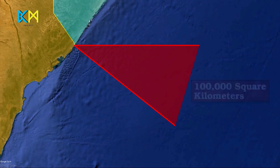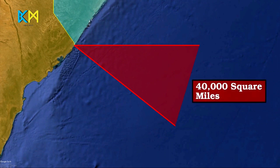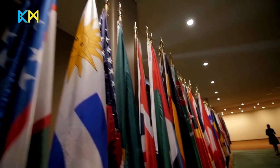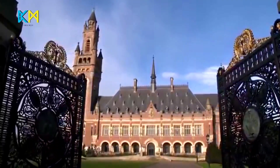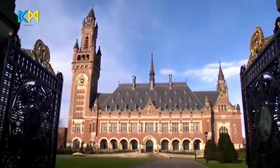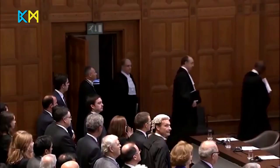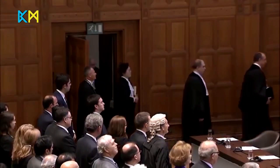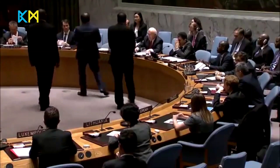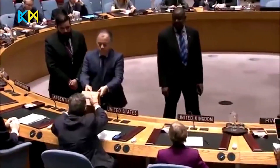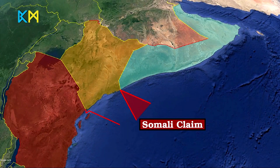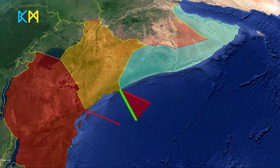The disputed area forms a large triangular region where large deposits of gas and fish are thought to exist. Kenya would like to work out the dispute in an out-of-court settlement, to which Somalia has disagreed. In 2014, Somalia sued Kenya at the International Court of Justice. The court represents one way of solving border conflicts in maritime areas if bilateral or regional attempts fail. Somalia's basis of the claim is not based on the direction of the land border, but rather on equidistant lines.